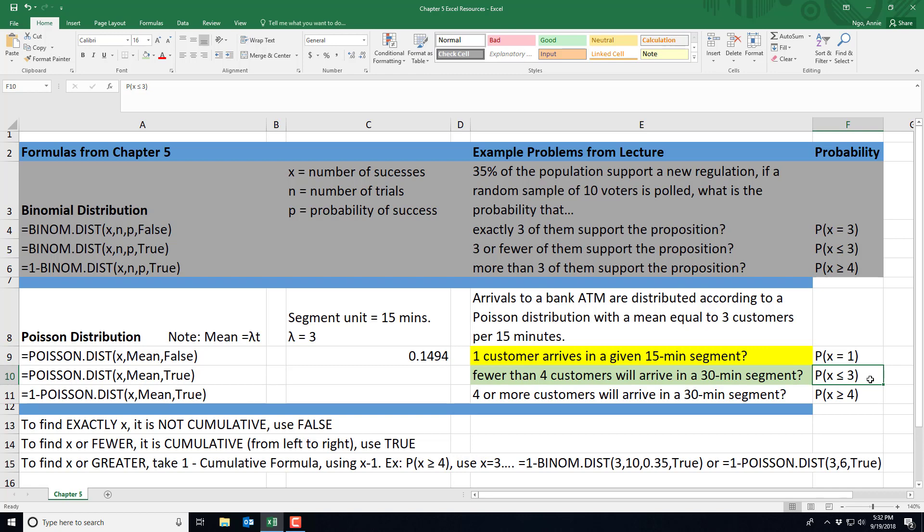And so I'm going to write x is less than equals 3 meaning I have 3, 2, 1 or 0 customers coming to our ATM.